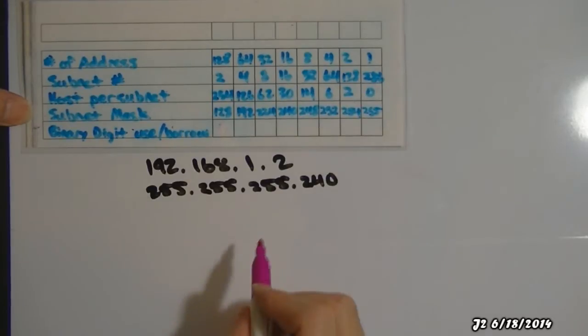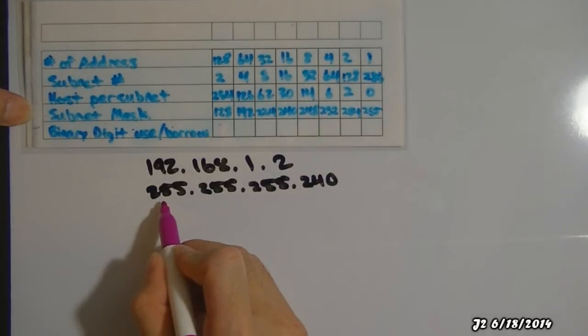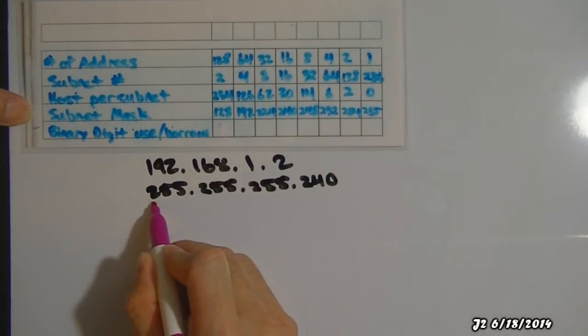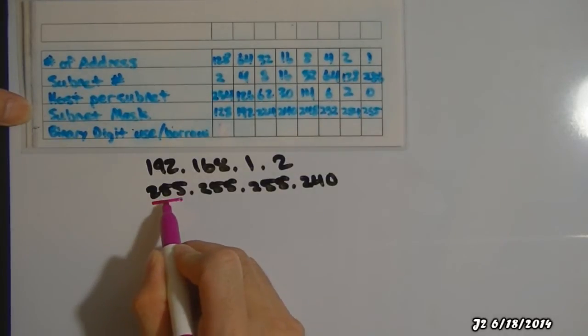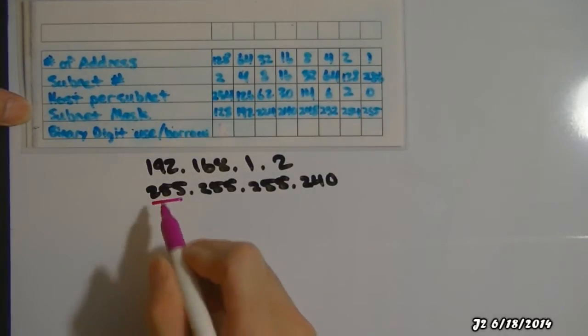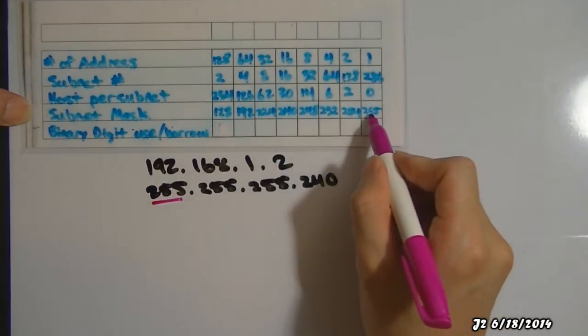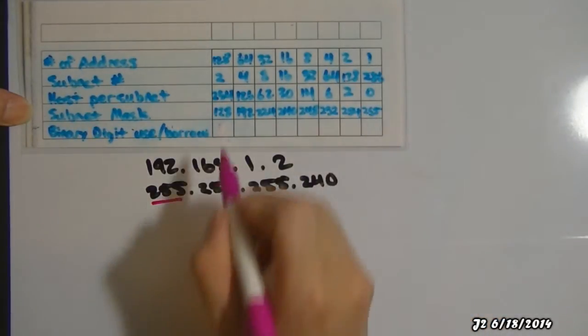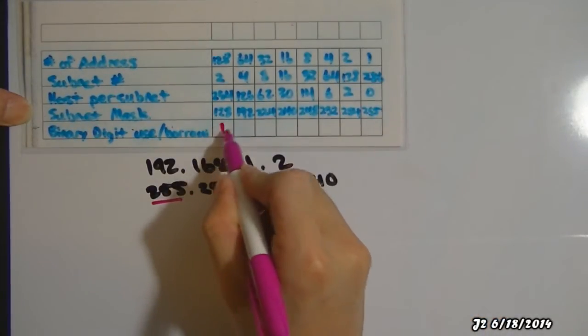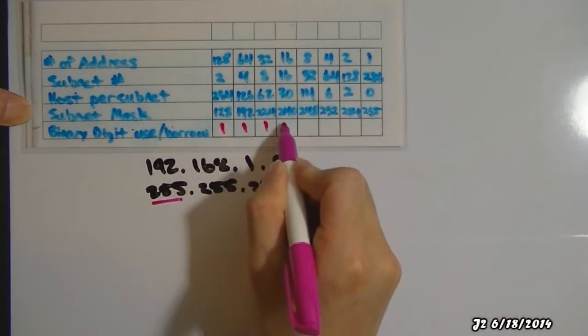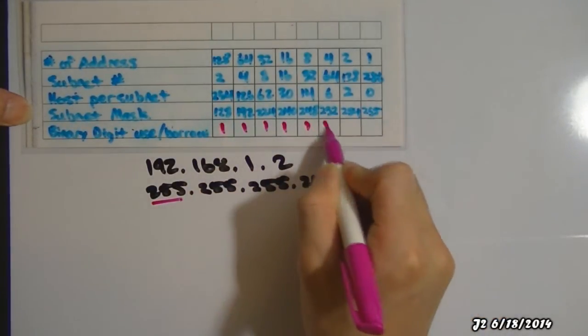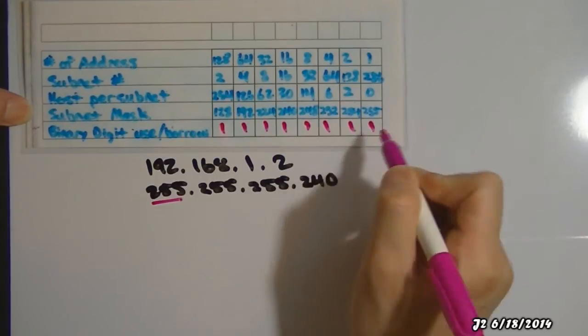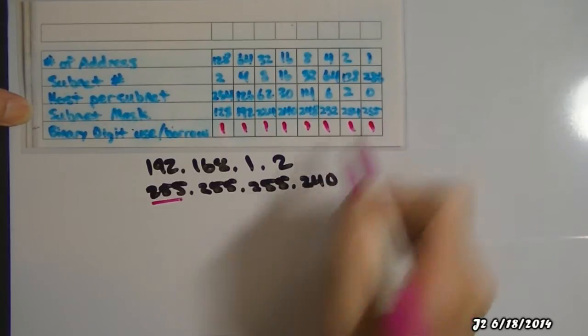So, I'm going to be looking at the first octet, and the first octet is 255. So right here I got 255, and I'm just going to fill this out: 1, 1, 1, 1, 1, 1, 1, 1 — all the way to 255.